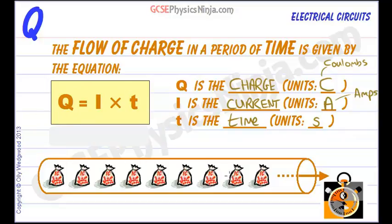So current is a flow of coulombs and it's how many coulombs pass by each second, hence the stopwatch and the coulombs flowing past in this wire.